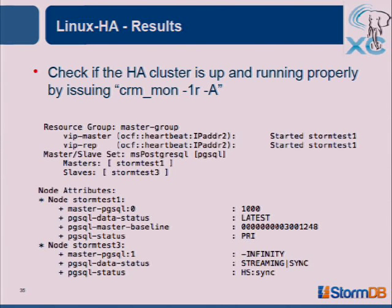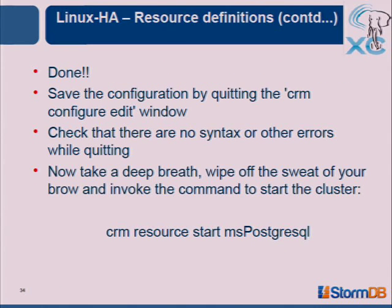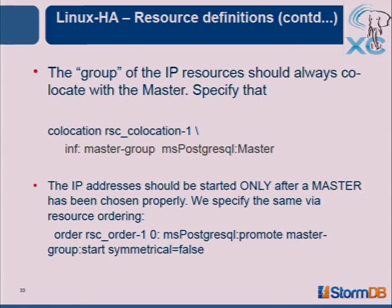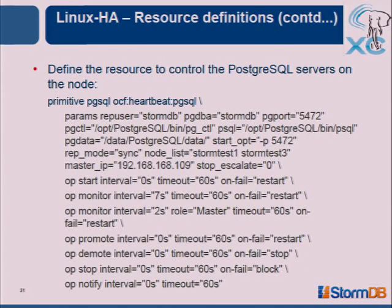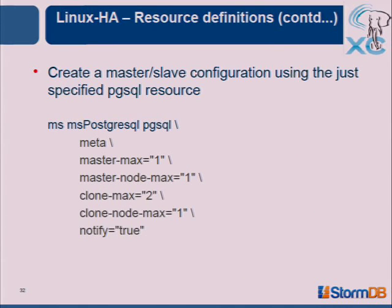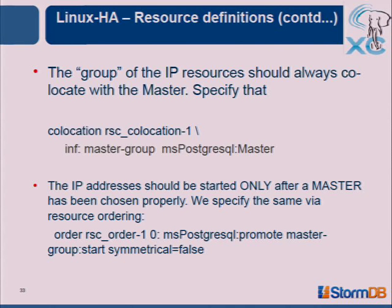You can see additional attributes that the PgSQL resource agent adds: stormtest1 is running as the primary, and stormtest3 shows minus infinity as the status for master, meaning it can never currently run as primary. All of this was done by the single resource start command, because we specified all the parameters — how many nodes to start on, the co-location — so it knew to start the IP addresses on the primary.